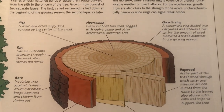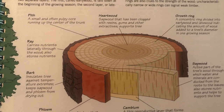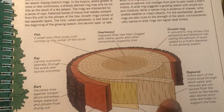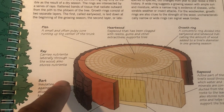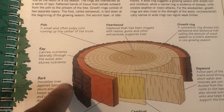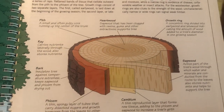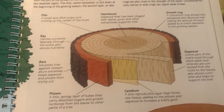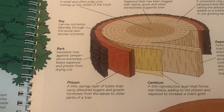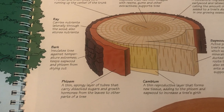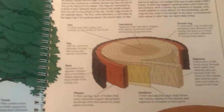How long is the growing season? The ray — these are kind of all pointing to the same thing — carries nutrients through the wood and also stores nutrients. The bark insulates the tree against temperature extremes and keeps the sapwood from drying out.